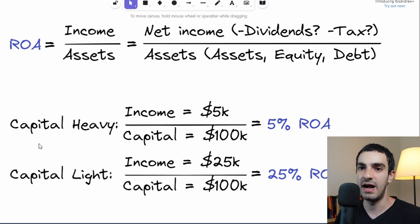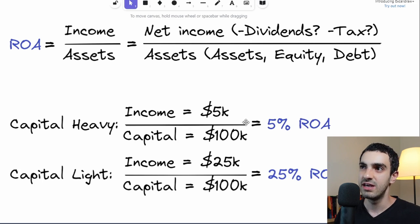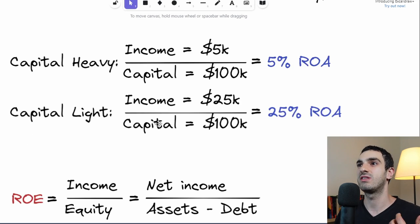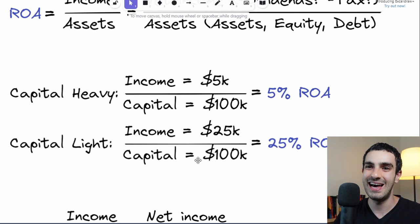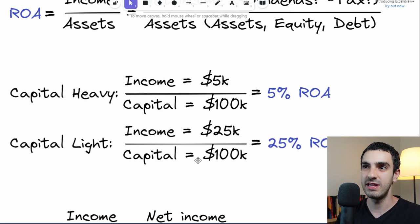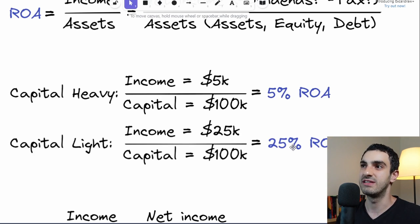Let's look at two simplistic examples. First, a capital-heavy company that has to buy a lot of machines: they bought a machine costing one hundred thousand dollars and this machine generates five thousand dollars in income — that's a five percent Return on Assets. Now for a capital-light company, with the same one hundred thousand dollars in assets they generated twenty-five thousand dollars in income. This could be a software company using basic laptops and cloud servers, employing programmers who create more income — giving a twenty-five percent Return on Assets.